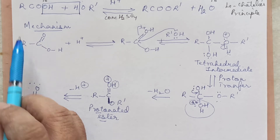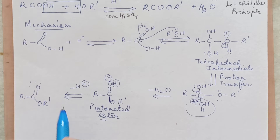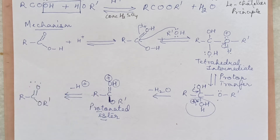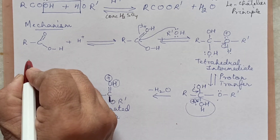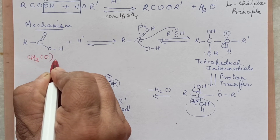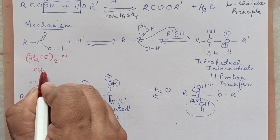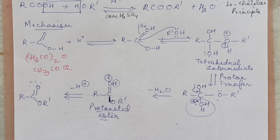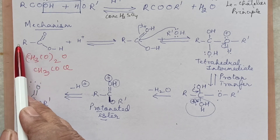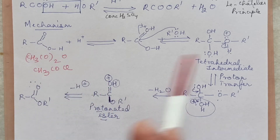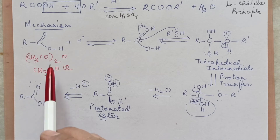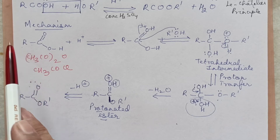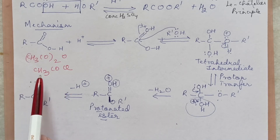Instead of carboxylic acid, we can also use acetic anhydride — CH3CO-O-COCH3 — or acid halide such as CH3COCl. These can also be used because what carboxylic acid gives is basically the carboxyl group — R-C=O. The OH part goes away as water, so the C=O group is obtained from the acid. You can also get this from acetic anhydride or acid halide.